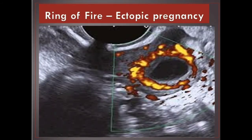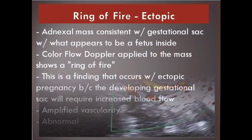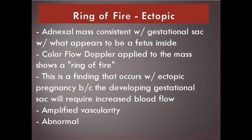Ring of fire. Ectopic pregnancy — adnexal mass consistent with a gestational sac which appears to have a fetus inside. Color flow Doppler applied to the mass shows a ring of fire. This occurs with ectopic pregnancy because the developing gestational sac requires increased blood flow, resulting in amplified vascularity. Abnormal.